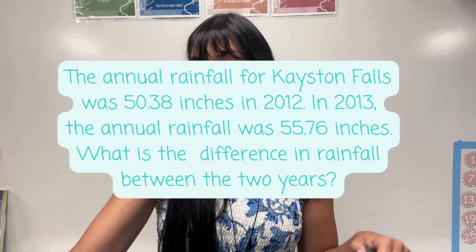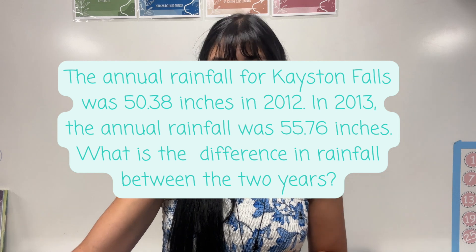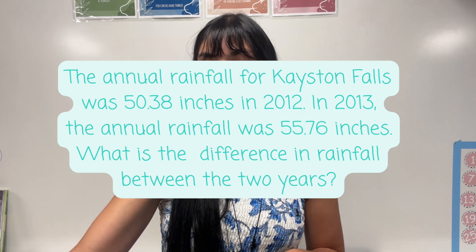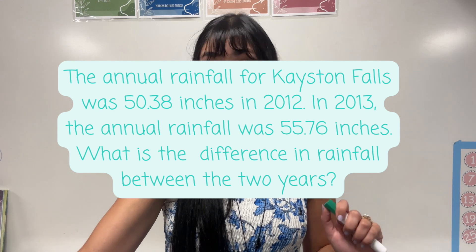For our last problem, I'm going to read a word problem. We're going to dissect it and figure out how to solve. So the annual rainfall for Cason Falls was 50.38 inches in 2012. In 2013, the annual rainfall was 55.76 inches. What is the difference in rainfall between the two years?